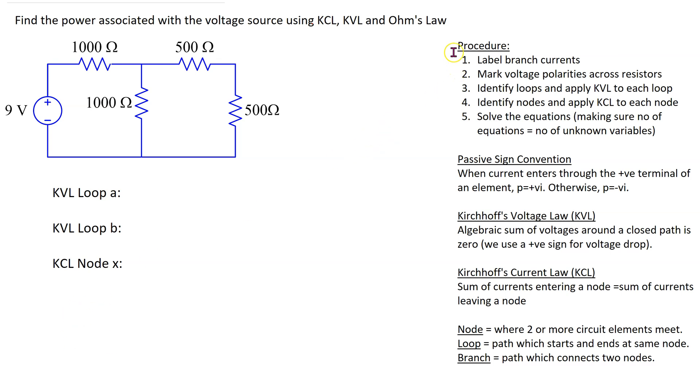The main steps involved in using KCL, KVL and Ohm's law to solve circuits are shown here. Recall that a node is where two or more circuit elements meet. A loop is a path which starts and ends at the same node and a branch is a path which connects two nodes.